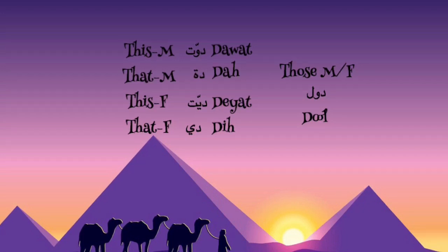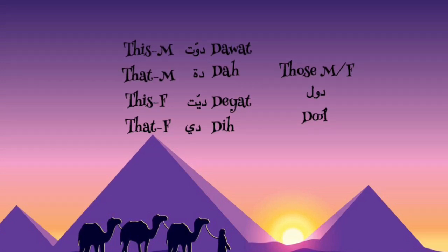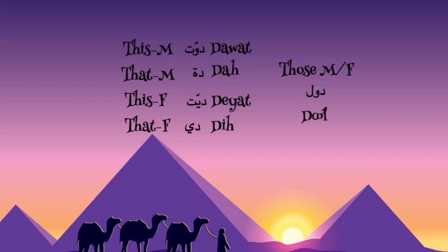This for female is 'Dayat'. That for female is 'Di'. So 'Dayat', 'Di'. And 'those' — where it doesn't matter male or female, people or things — is 'Dawal'. So those is 'Dawal'.